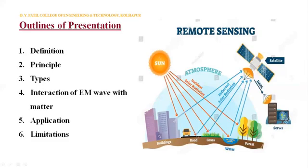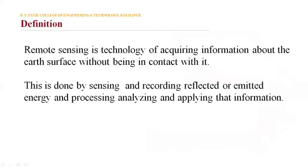Remote sensing by definition is a technology of acquiring information about the Earth's surface without being in contact with it.